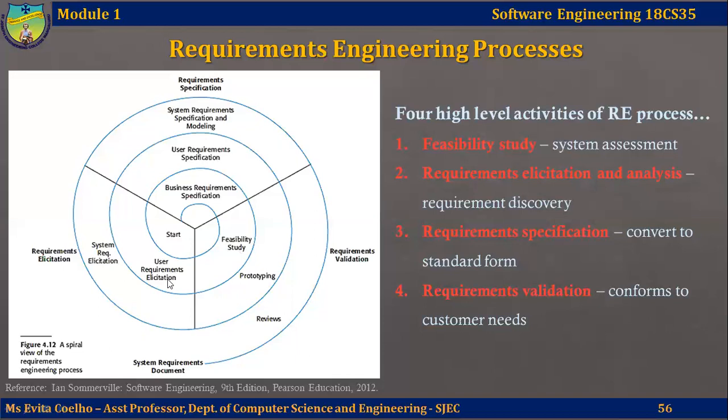Continuing through the spiral, the next activity is user requirements elicitation. User requirements describe what the users are going to do with the system — what activities the user must be able to perform. User requirements are documented in a user requirements document and are generally signed off by the user, serving as the primary input for creating system requirements. Elicitation is a process of gathering these user requirements through constant interaction with customers and end users.